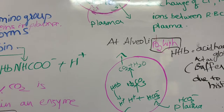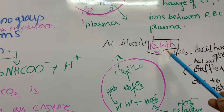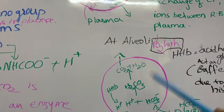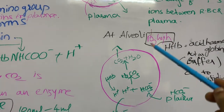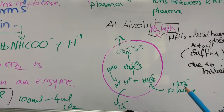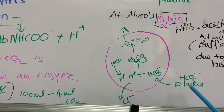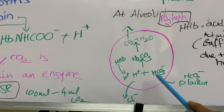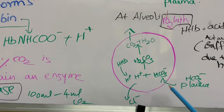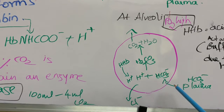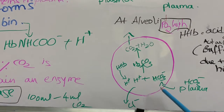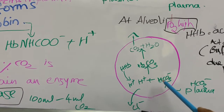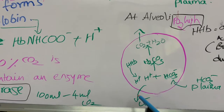This blood then goes to the alveoli. At the alveoli, the partial pressure of oxygen is very high and the partial pressure of carbon dioxide is very low. Under these conditions, the bicarbonate ions present in the plasma re-enter the RBC.